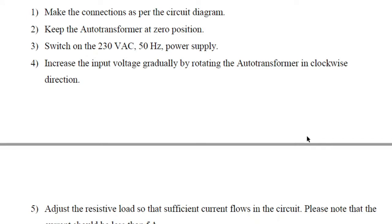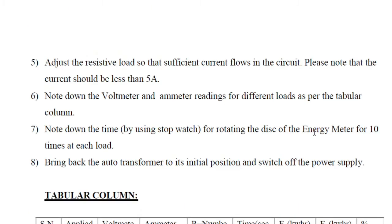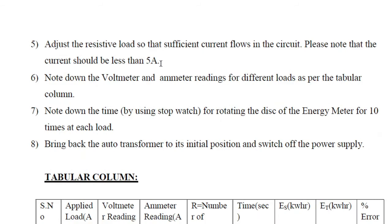Switch on the 230 volts AC supply, then increase the input voltage by rotating the auto transformer in the clockwise direction. Adjust the resistive load so that sufficient current flows in the circuit. Please note that the current should be less than 5 amps, because 5 amps is the maximum current allowed in the meter — exceeding 5 amps will damage the meter. Note down the voltmeter and ammeter readings for different loads as per the tabular column.